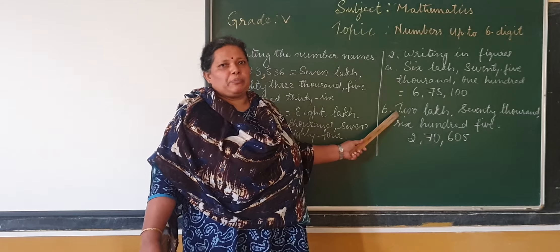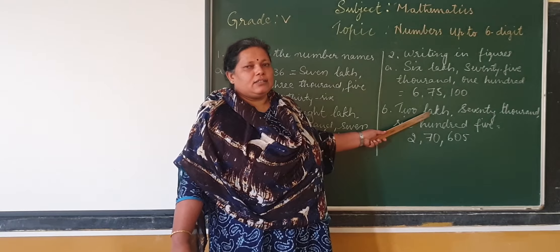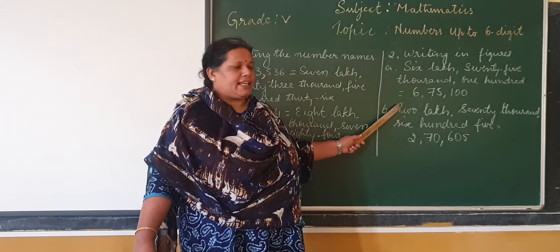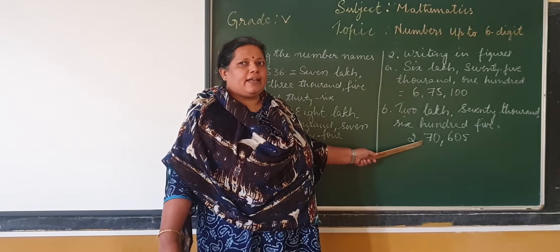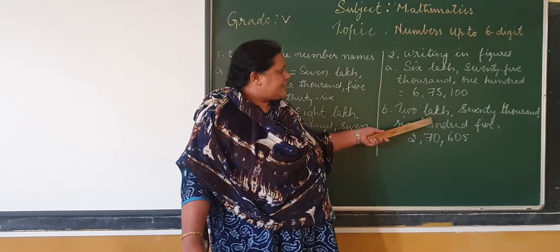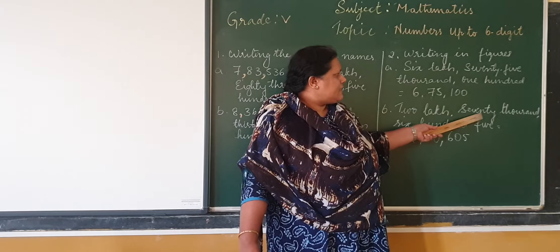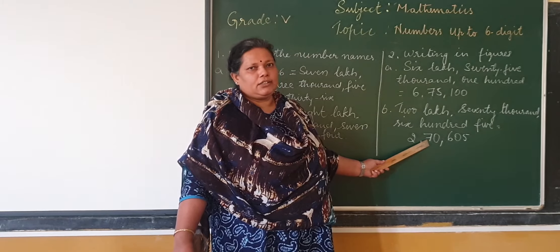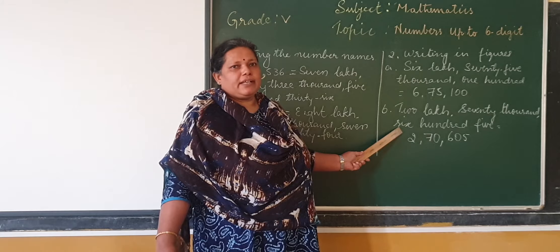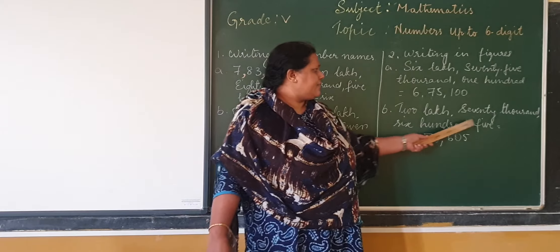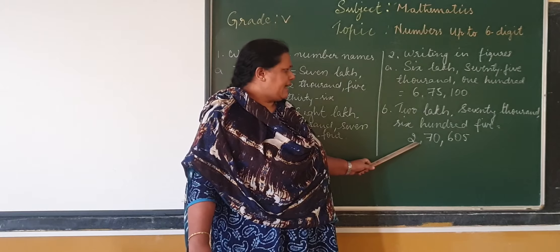Similarly, we will see one more example. Let's read: 1,2,70,605. Let's see here also by looking at the periods. The period will start from lakhs. How many lakhs are given here? 2 lakhs, that is the number 2. Put the comma. Then move to the right side, which comes to the thousands period. How many thousands are given here? 70,000. Then put the comma and move to the ones period, that is 605.